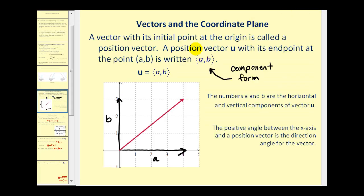A vector with its initial point at the origin is called a position vector. A position vector u with its endpoint at the point (a,b) is written using this notation. Notice they use this type of bracket instead of rounded parentheses, so it's not confused with an ordered pair. This is called component form.